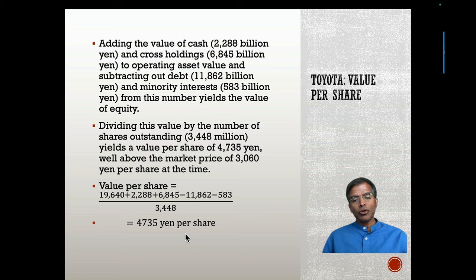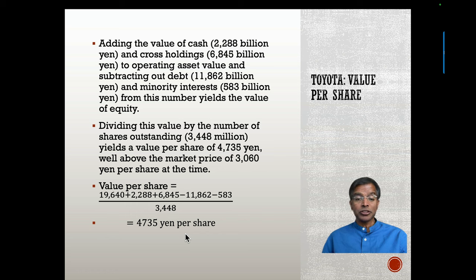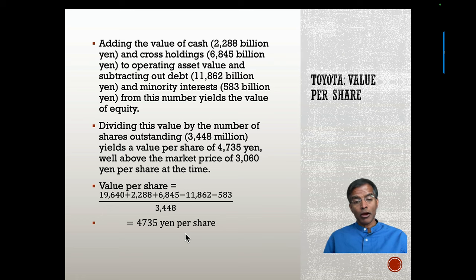One thing I am doing is assuming instant normalization. If in 2009 you felt it could take at least two years before you get to those normalized earnings, here's a simplistic adjustment: take the 4,735 yen, discount it back two years at your cost of capital of 5.09%, and get the value today. That will take care of the time value of money of having to wait for normalization.